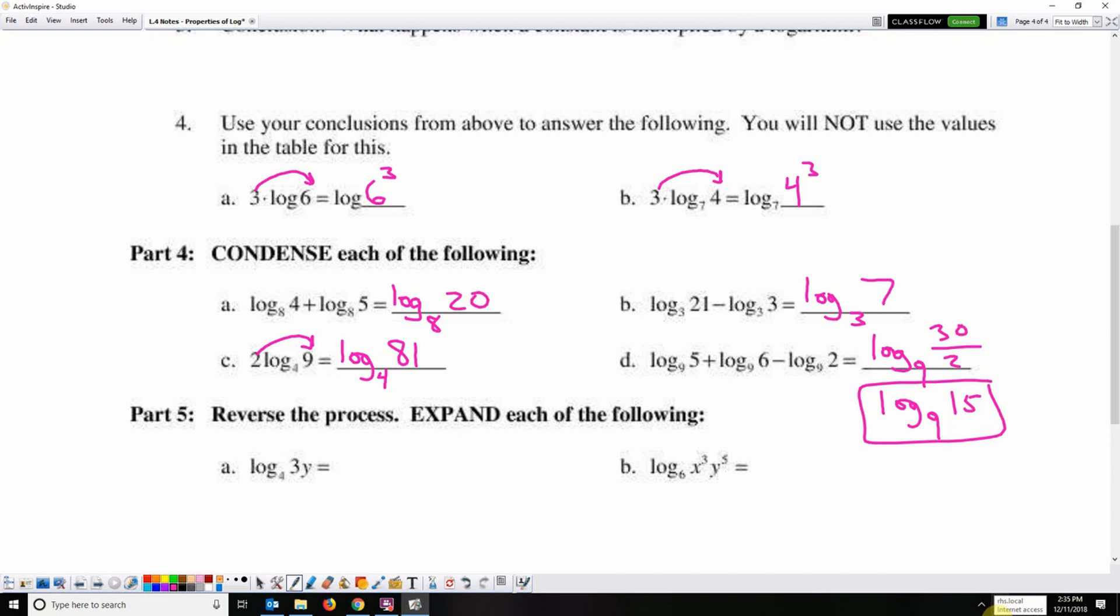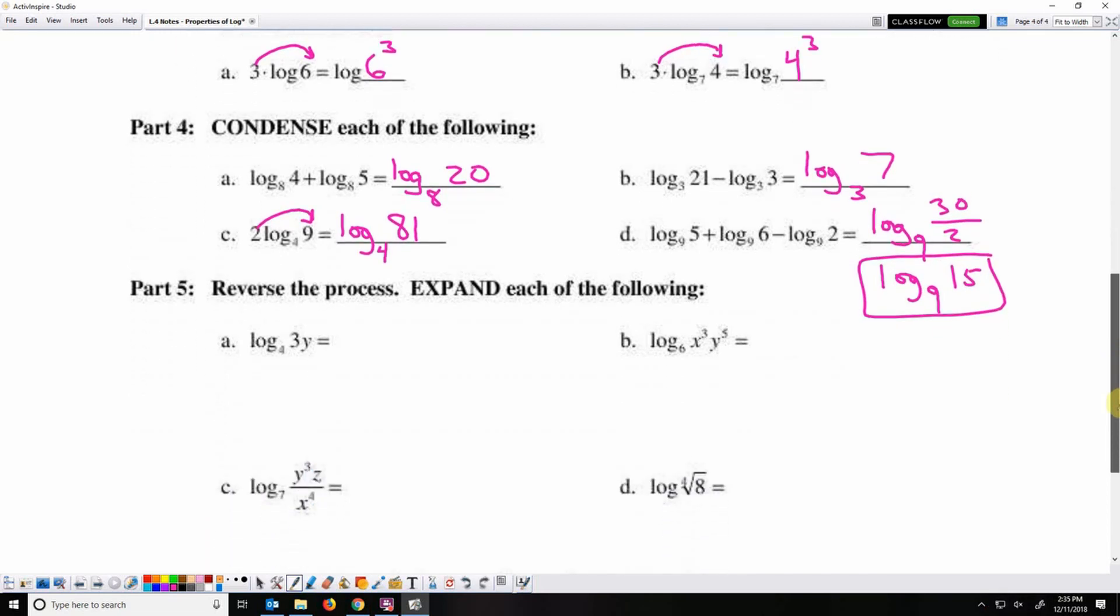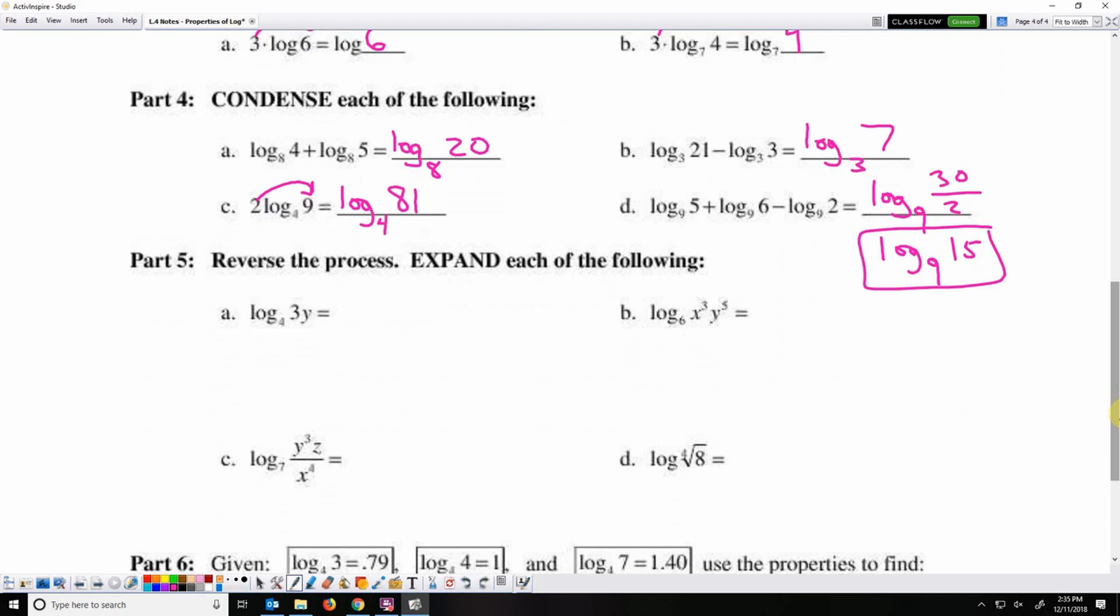Okay, so that is condensing. Now we're going to reverse that and expand. So when you condense, you take multiple logarithms down to 1. When you expand, you take one logarithm and expand it to multiple logarithms. We've got 3 times y in the argument, so that means this is the same as log base 4 of 3 plus log base 4 of y.